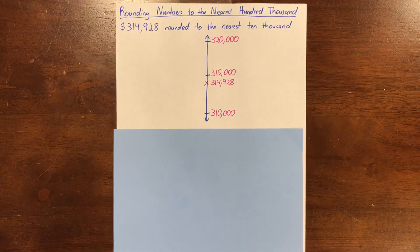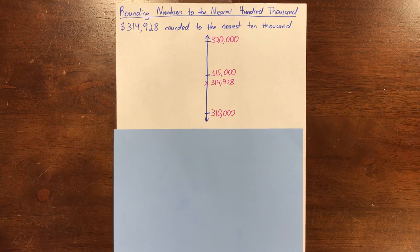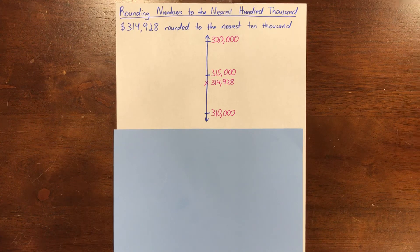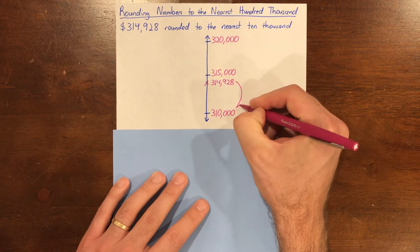What is 314,928 rounded to the nearest 10,000? How do you know? Say it out loud. 314,928 rounded to the nearest 10,000 is 310,000, because that is the 10,000 that our number is closest to.